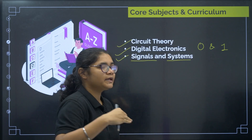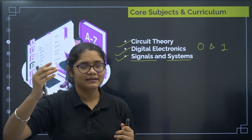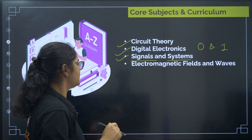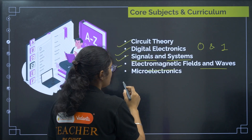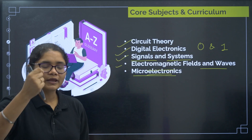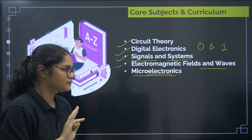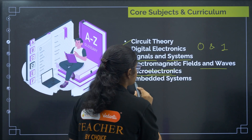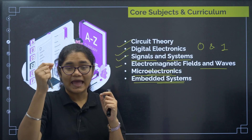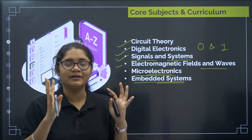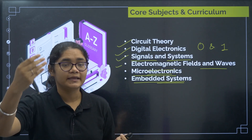In Signals and Systems, you learn how to transfer and amplify signals. Electronic Fields and Waves is another subject. Microelectronics covers how to make very tiny, small circuits and how they work. In Embedded Systems, you learn how to embed or attach a small computer to different devices to improve their efficiency and function.